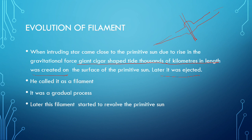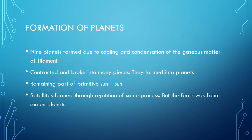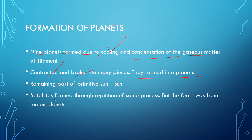As the intruding star came closer gradually, due to gravitational forces this filament formed. Later, the filament started to revolve around the primitive sun. This led to the formation of nine planets through cooling and condensation of the gaseous matter — the filament contracted, broke into many pieces, and they formed into planets. The remaining part became the present-day sun.